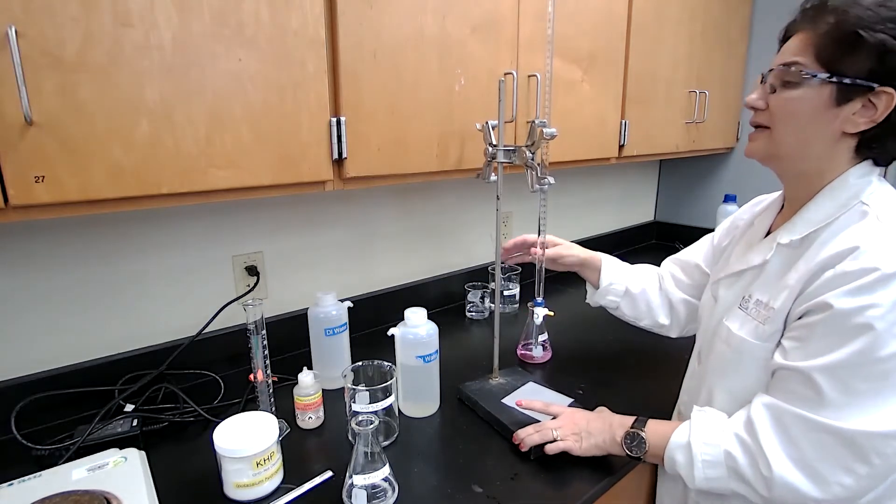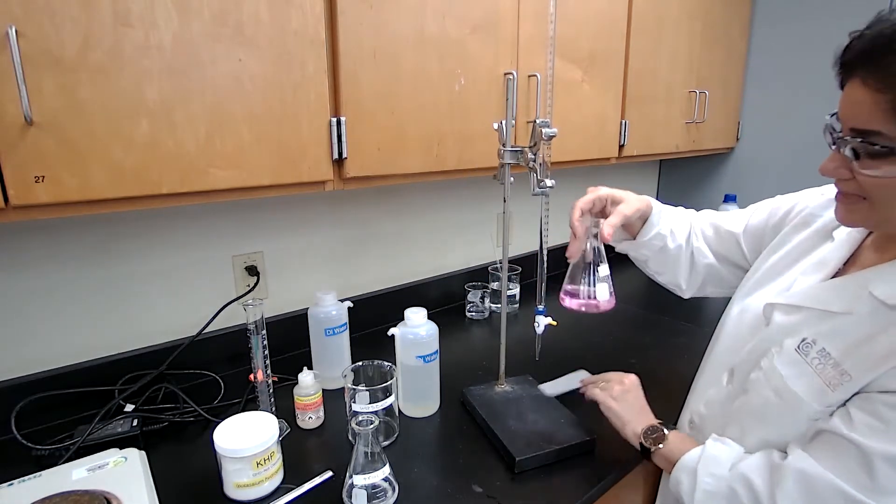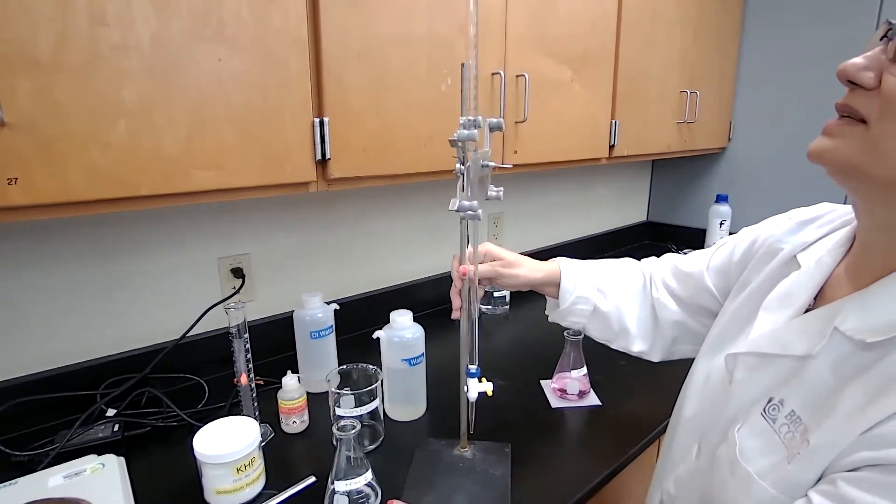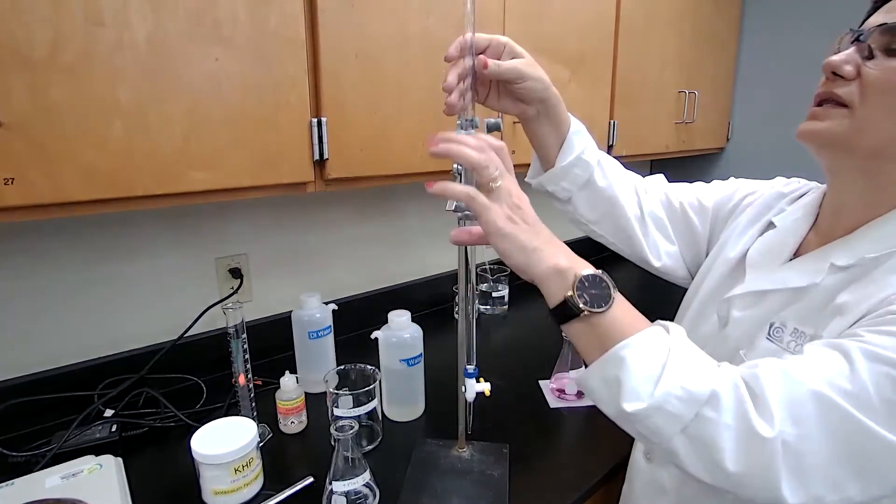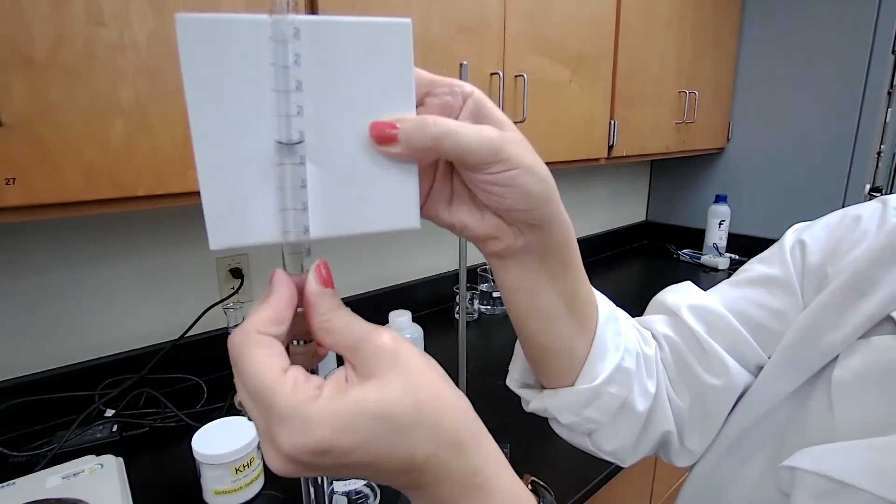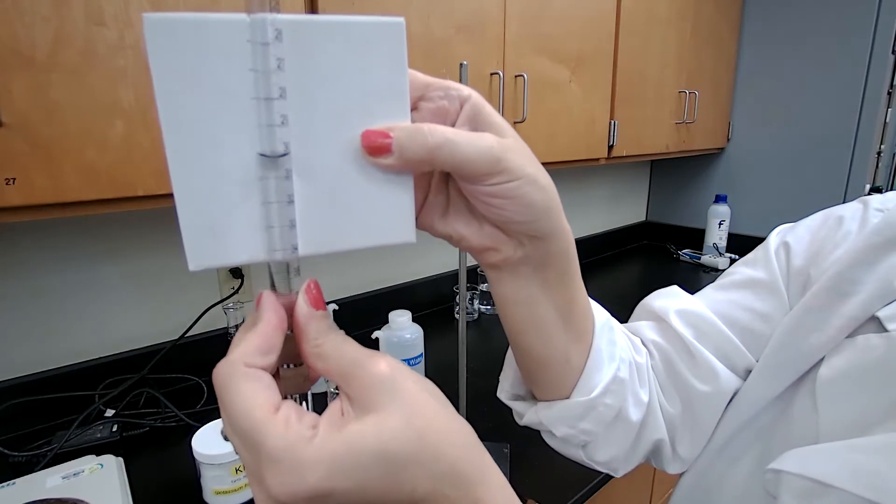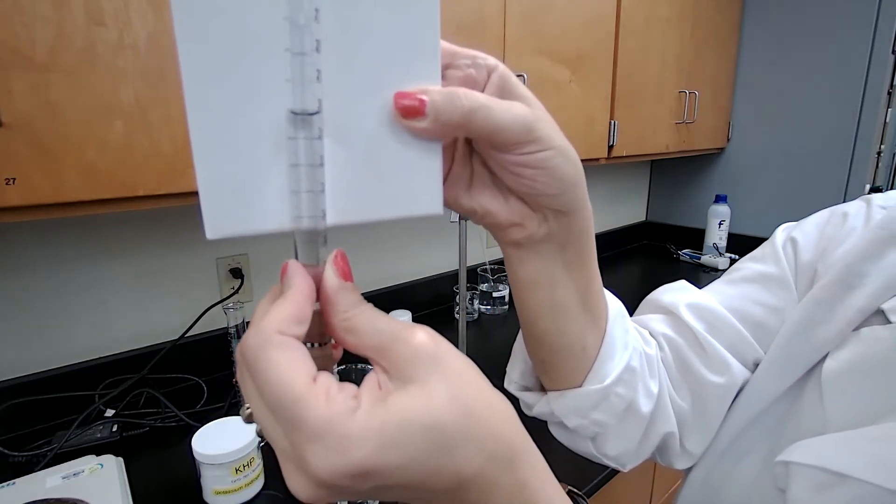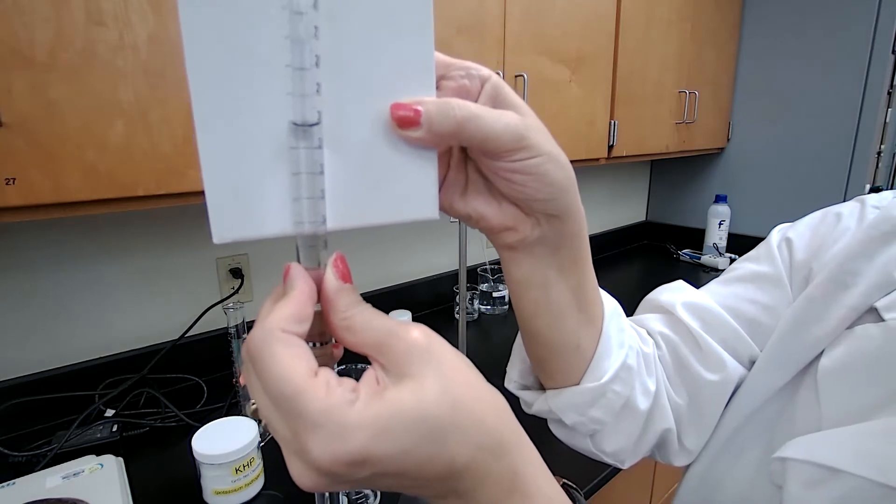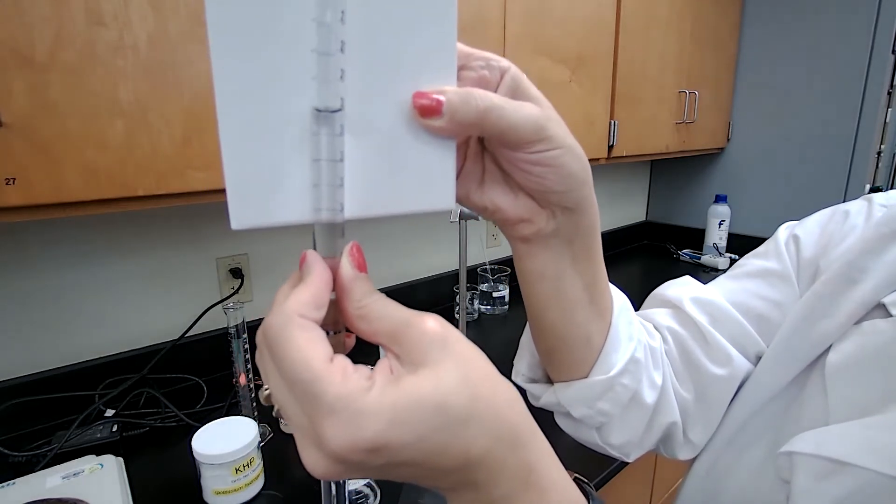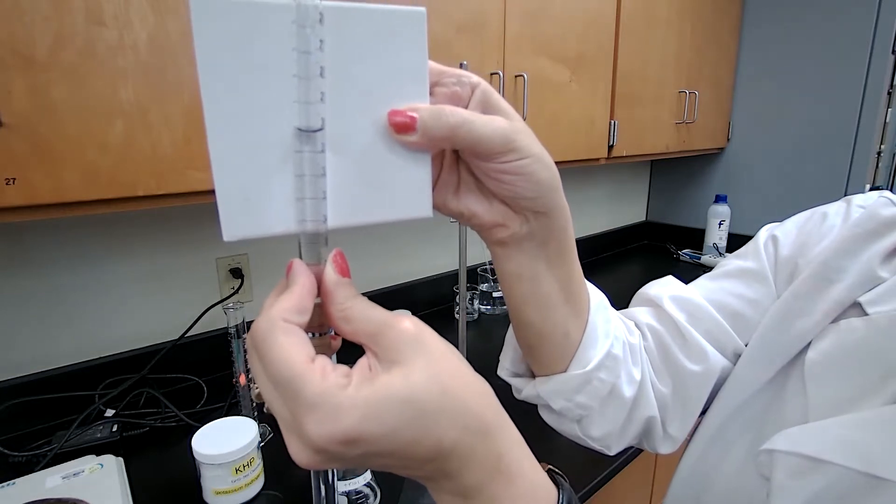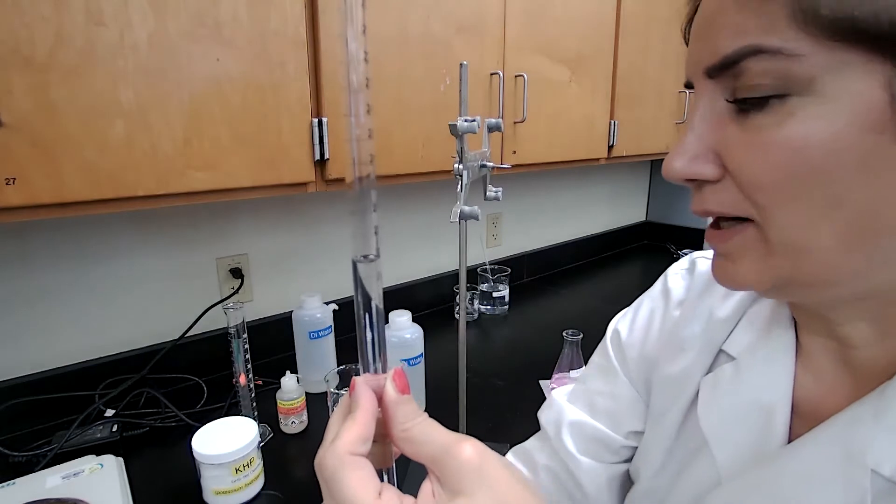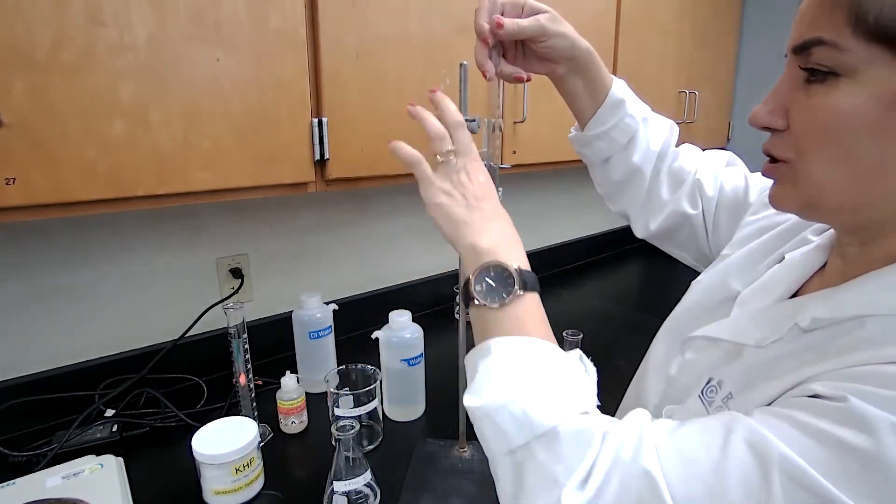The final burette reading—because this is stable now and it's light pink color—is between 30.2 and 30.3. You can estimate the second decimal place. So please record this as the final burette reading for trial one. And we are going to start with trial two.